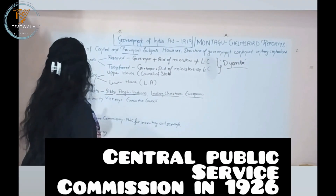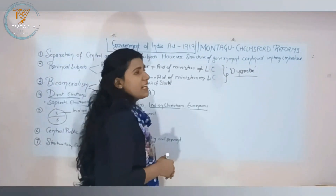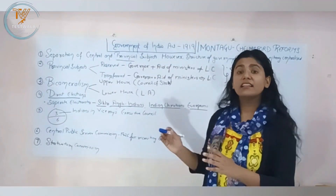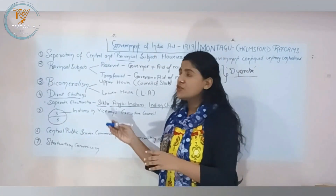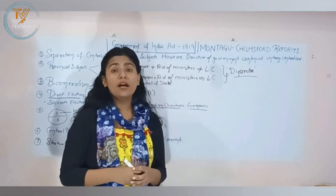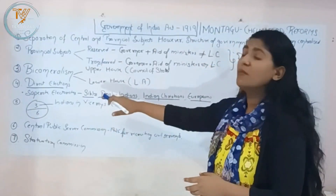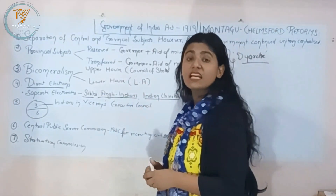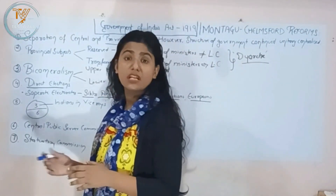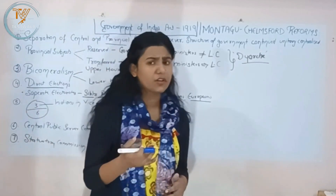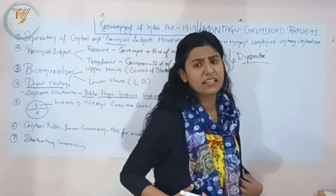It was designed that a statutory commission would come ten years later to review the Act. But it came eight years later. What happened? The Simon Commission arrived two years early, and it was noted that no Indian members were included in it.